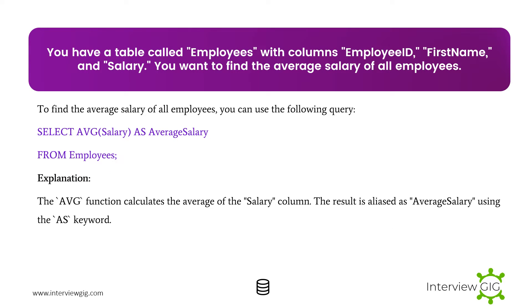Next Scenario: You have a table called Employees with columns Employee ID, First Name, and Salary. You want to find the average salary of all employees. To do this, you can use the following query. The AVG function calculates the average of the Salary column, and the result is aliased as Average Salary using the AS keyword.